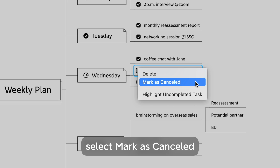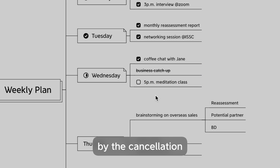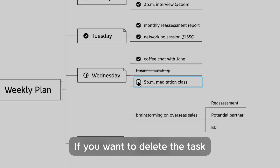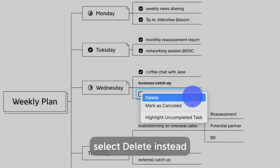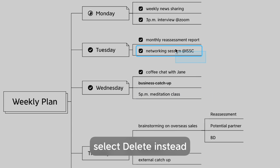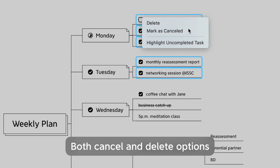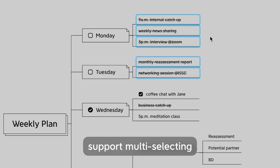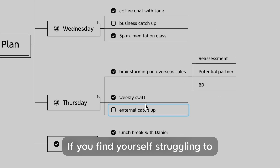To cancel or delete tasks: to cancel a task, simply right-click and select Mark as Cancelled. Your task progress will not be affected by the cancellation. If you want to delete a task, select Delete instead. Both cancel and delete options support multi-select.